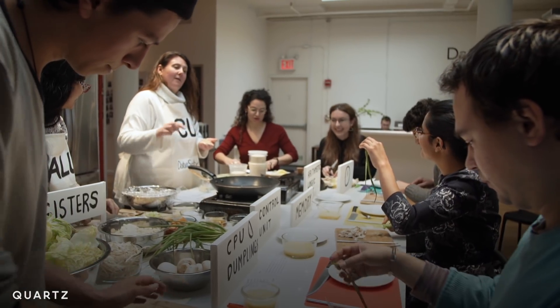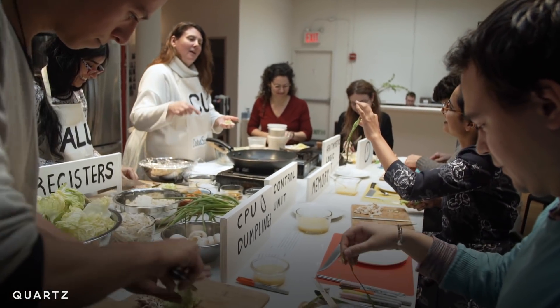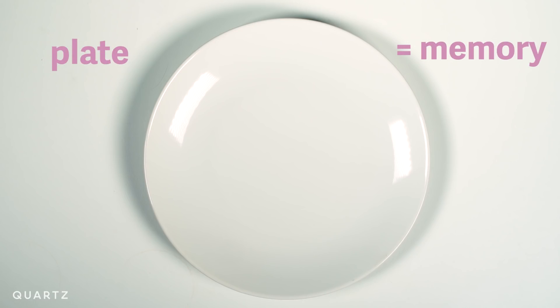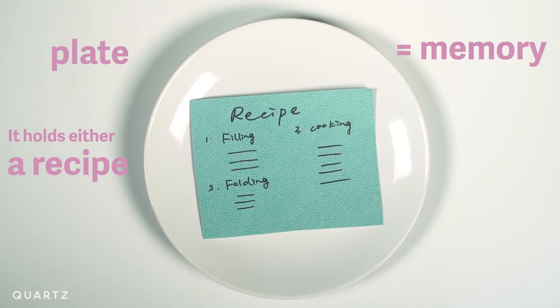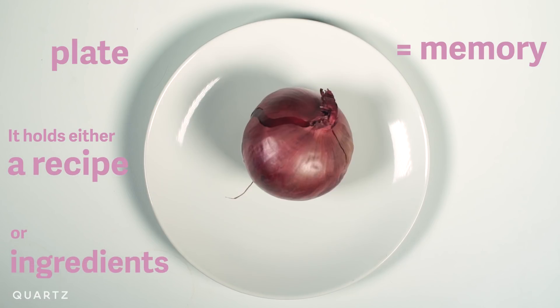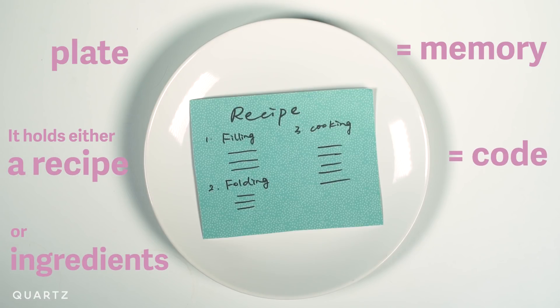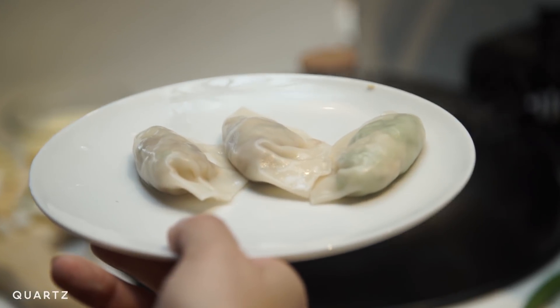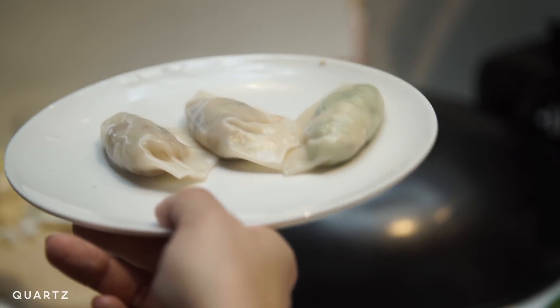This process, or the cooking, is possible because there is memory. Memory is like these white plates that we will be using. Each memory could either hold a recipe or the materials — so it's code or data. And when the dumpling is done, the finished dumpling could go back into the memory as well. So anything that happens inside a computer needs to happen through this container.